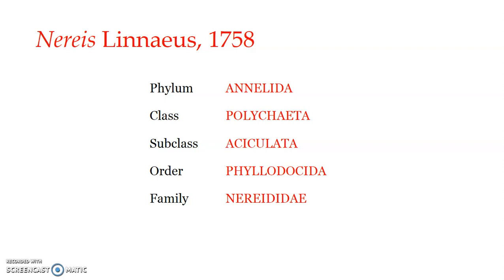All members of Annelida, as already discussed, possess annuli or segmentation, so they are all metamerically segmented. Phylum Annelida includes animals whose bodies are divided into a linear series of segments. Nereis is included under Polychaeta because of the presence of many setae or bristles in the body. The family was earlier called Nereidae and is now Nereidae. Nereis is also referred to as Neanthes by some scientists.